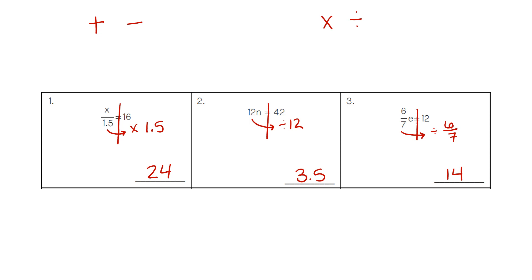Notice my arrow is going from the variable and pointing to the other number. It does not matter if it's going left or right — you always start with the variable and move towards the other number.